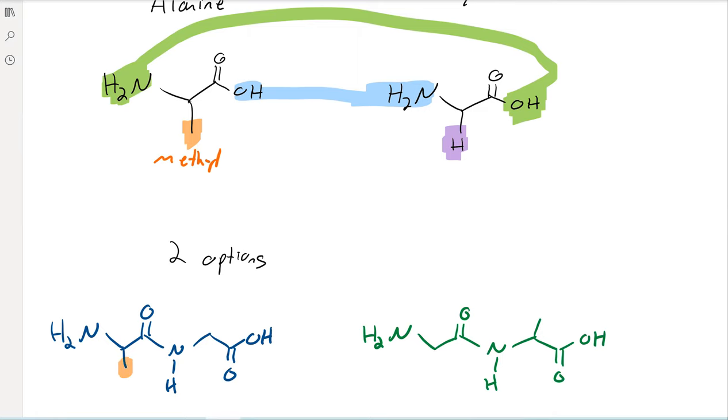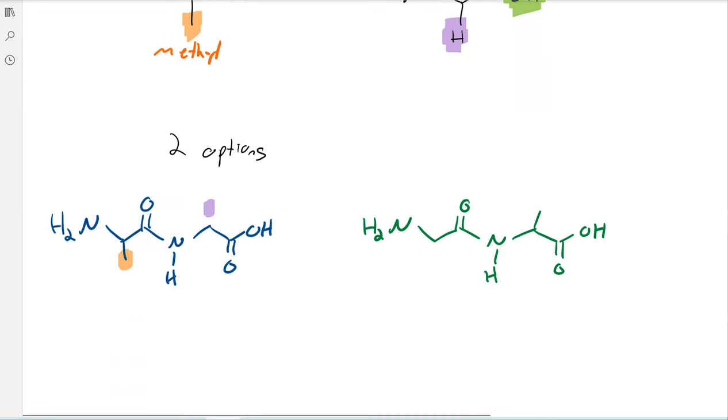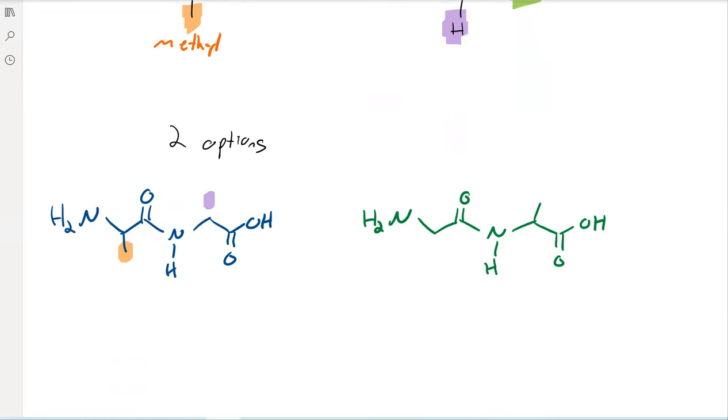So in this case, again, right, we have alanine here. And then with the hydrogen glycine. So here we've got alanine, then glycine. And then on the other side, we've got glycine and then alanine. Right? Again, glycine with the hydrogen. And then alanine with the methyl.